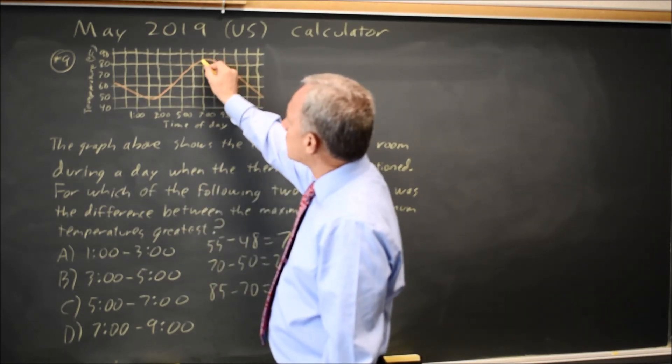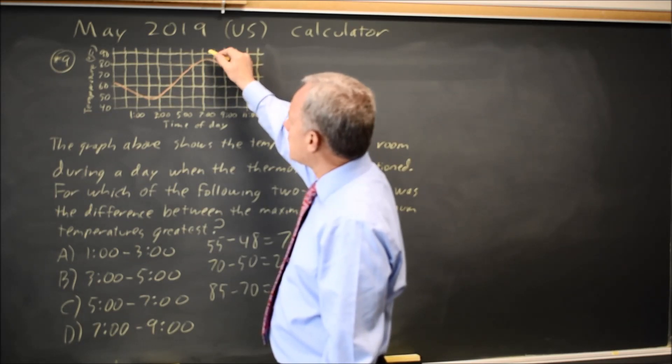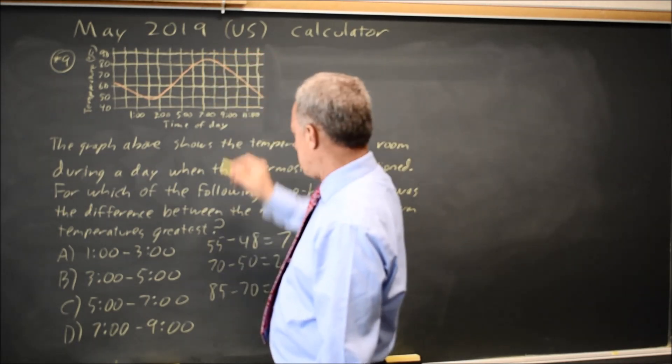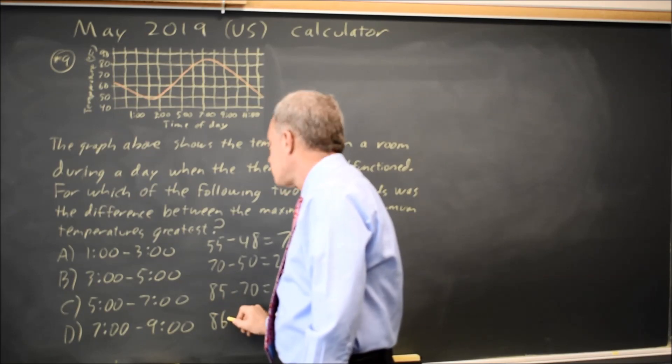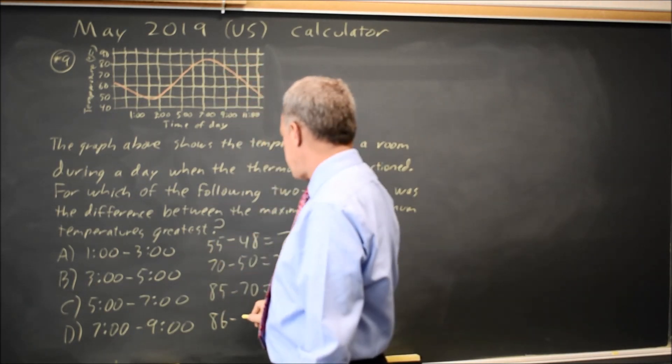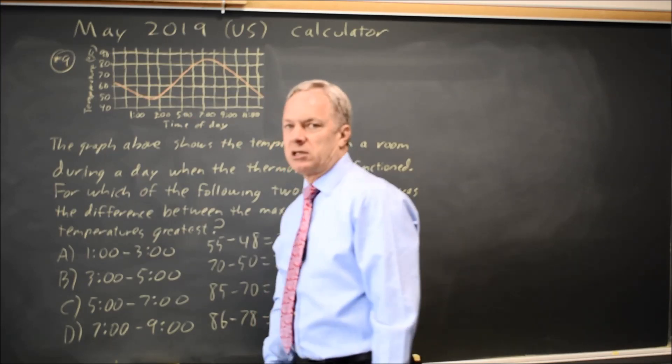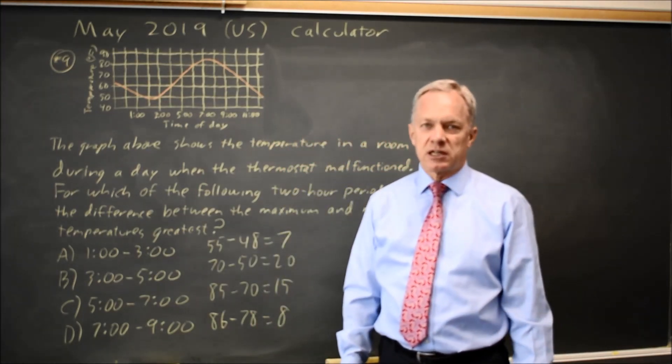And from 7 to 9, at 7 o'clock we're 85, but we go up to maybe 86 is the maximum, and the minimum is at 9 o'clock, maybe 78, and that's about 8 degrees.